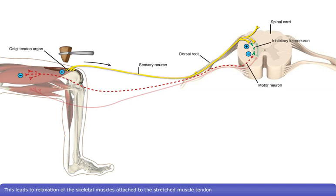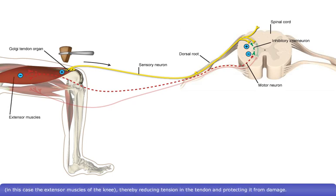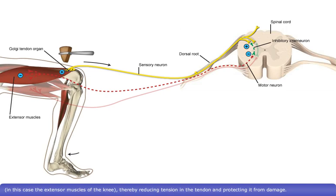This leads to relaxation of the skeletal muscles attached to the stretched muscle tendon. In this case, the extensor muscles of the knee, thereby reducing tension in the tendon and protecting it from damage.